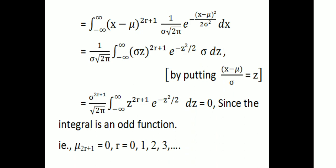We get 1 over σ√(2π), integral from minus infinity to infinity, of (σz) raised to 2r+1 times e raised to minus z²/2, times σ dz. Here we substitute z equals (x minus μ)/σ, so x minus μ all squared becomes z² times σ², dx becomes σ dz, and x minus μ equals σz.